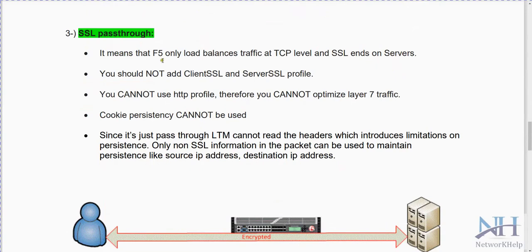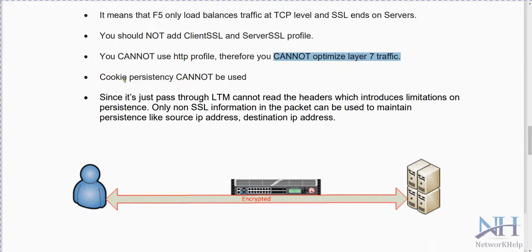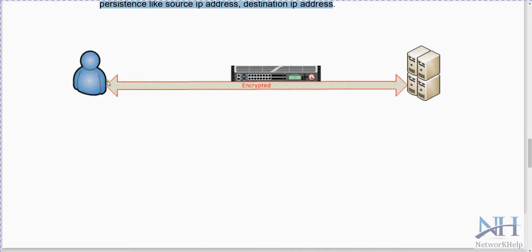Next is SSL pass-through. With this method, F5 only load balances traffic at the TCP level, and SSL traffic passes directly to the server. You should not add a client SSL or server SSL profile in SSL pass-through. You cannot use an HTTP profile, therefore you cannot optimize layer 7 traffic. Cookie persistence cannot be used since LTM cannot read the header, which introduces limitations on persistence. Only known SSL information in the packet — such as source IP address and destination IP address — can be used to maintain persistence. Traffic will be encrypted end-to-end.